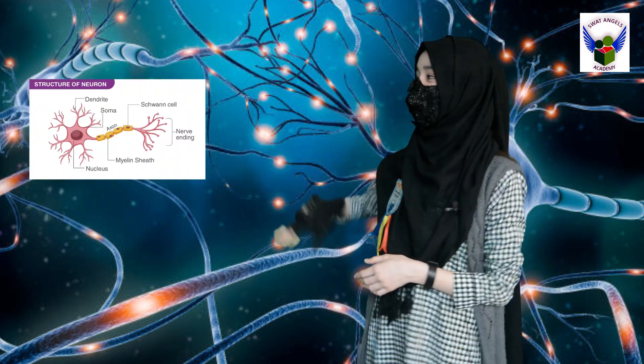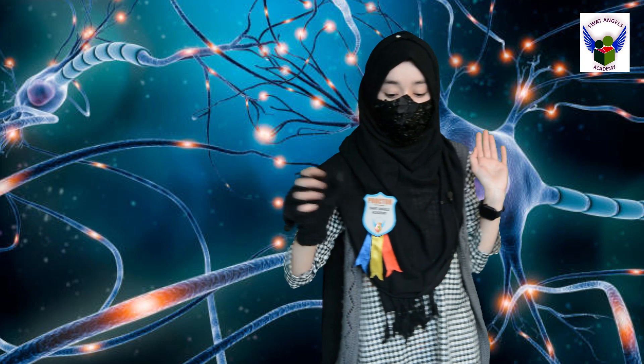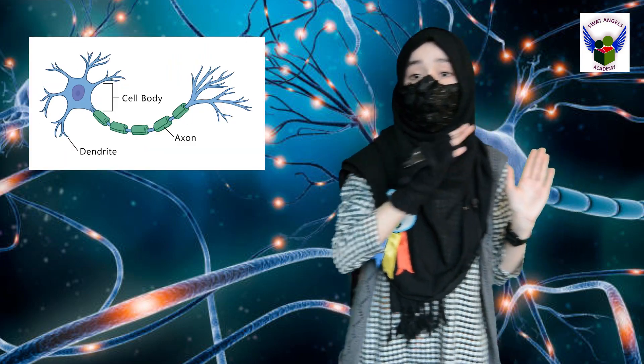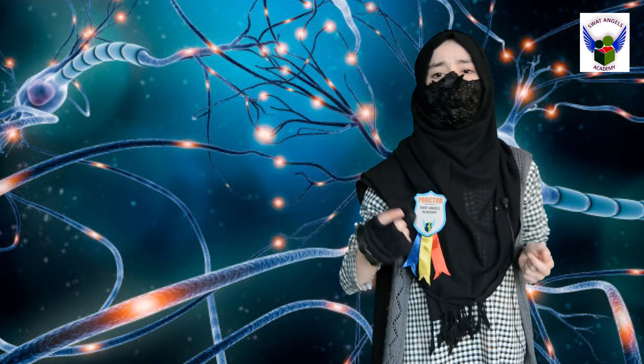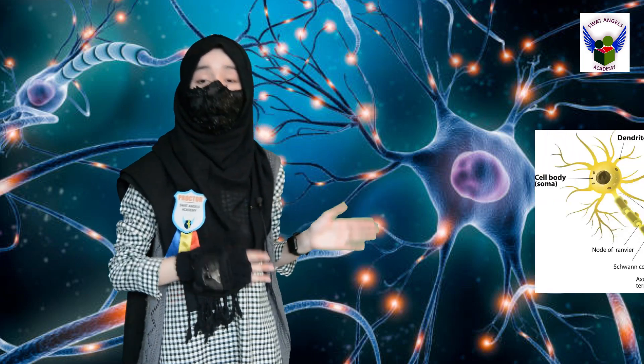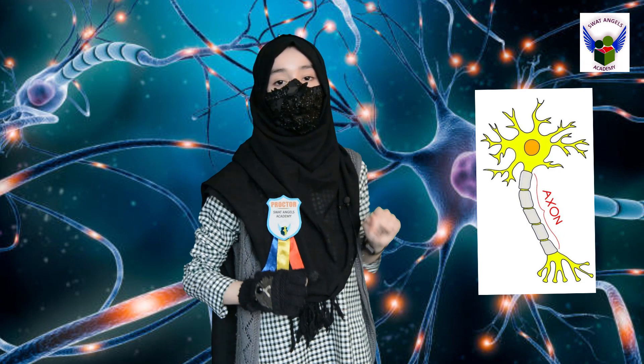Now, let us come to the structure of Neuron. The Neuron consists of three parts: cell body, dendrites, and axon. The cell body refers to the main cell. Then there are dendroids, which resemble a tree-like structure. And then the axon, which is a long thread-like cable.